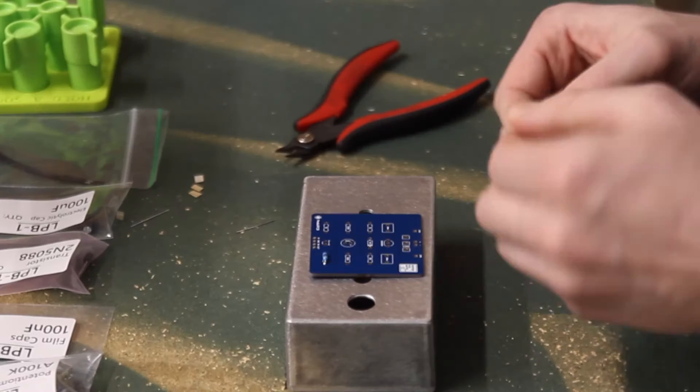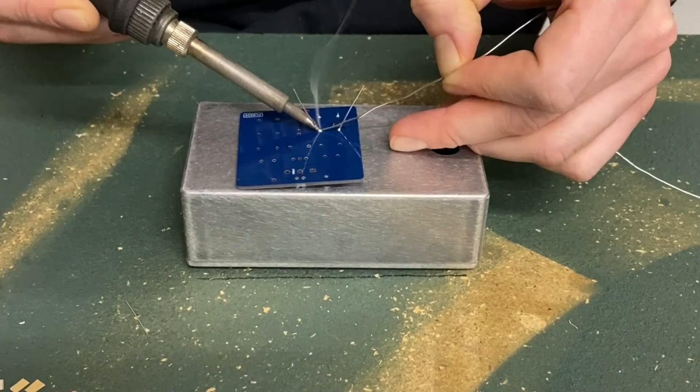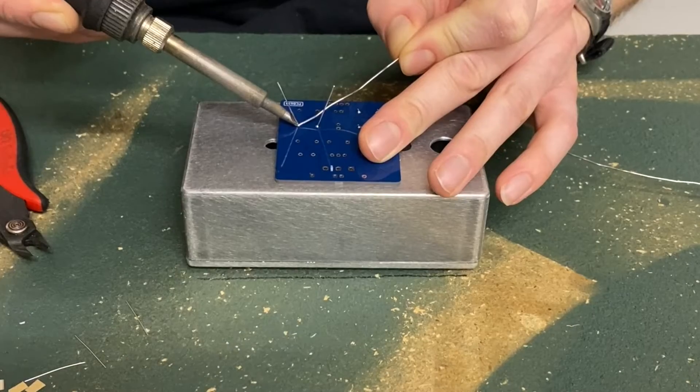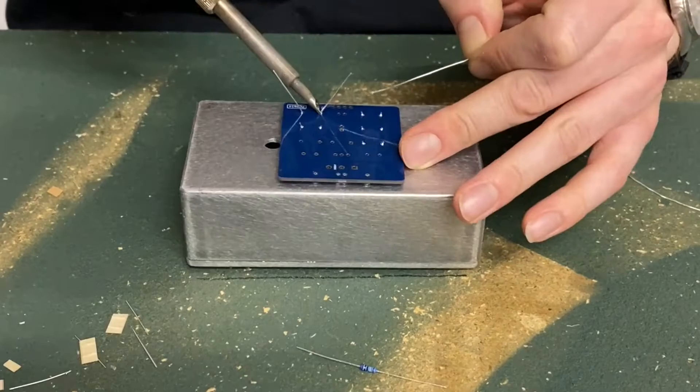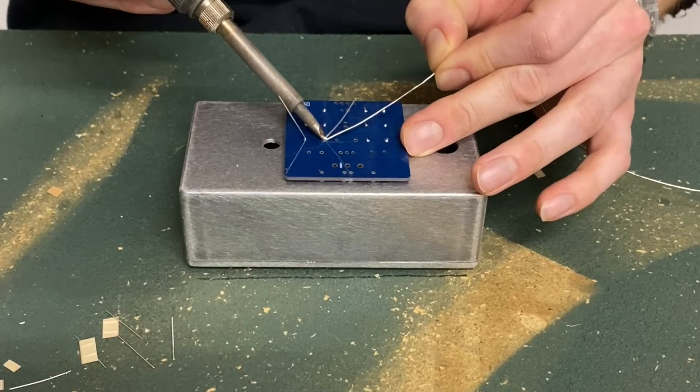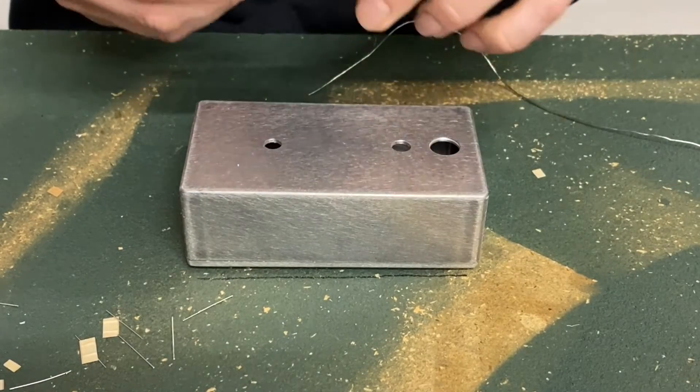Grab your 100K resistor and do the same thing. Bend the legs, insert into the board, and solder it in. Repeat with the rest of the resistors until all of them have been soldered onto the PCB. Take your time and double check parts and placement along the way to ensure the right parts are going into the correct places. It is much more difficult to correct an error than it is to do it correctly the first time.